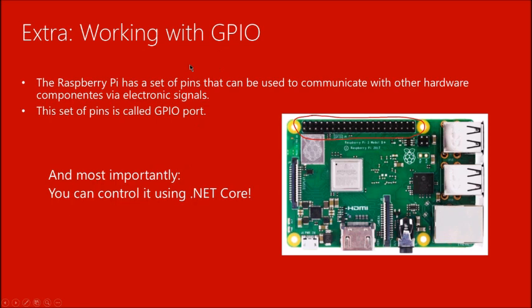This is the last part of the webinar: working with the GPIO port. You'll have noticed the Raspberry Pi has a long port full of pins you can use to communicate with external hardware components. You can control them from .NET Core applications — it has no difference from the API application we deployed before. Just create a console program and you're done.